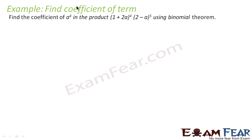This is the example where we have to find the coefficient of terms. Here we have to find the coefficient of a to the power 4 in the expansion using Binomial Theorem. We will expand this first and then multiply.